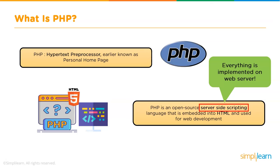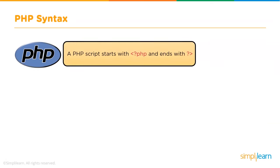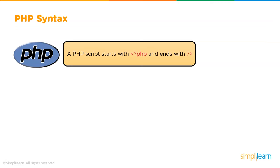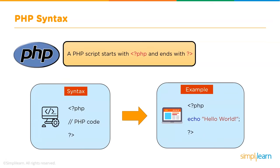Now let's see how a PHP script looks. As you can see on the screen, this is the syntax of PHP. It opens with an angle bracket followed by a question mark and PHP, and ends with a question mark and an angle bracket, while the code comes in between them. This is very similar to how HTML code is written.